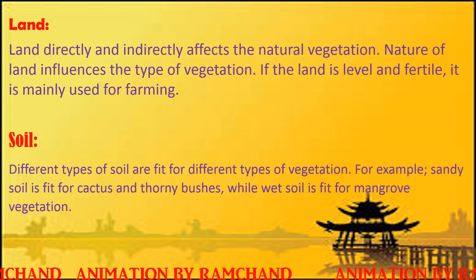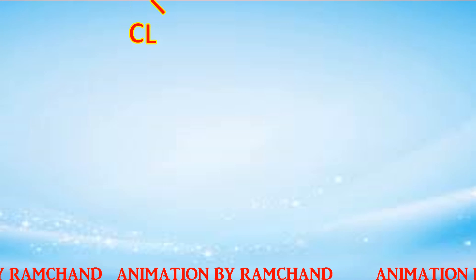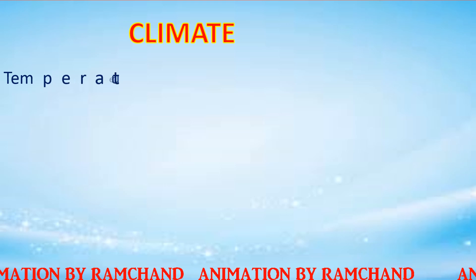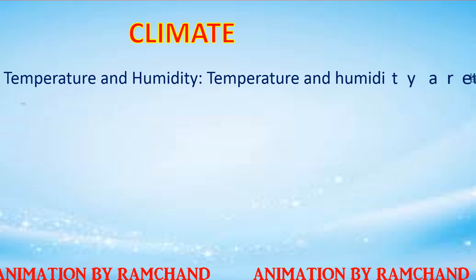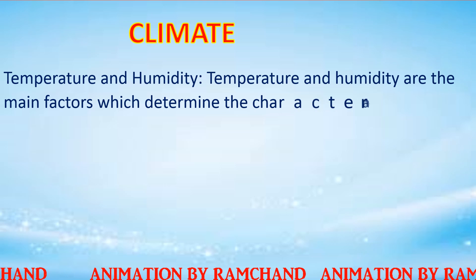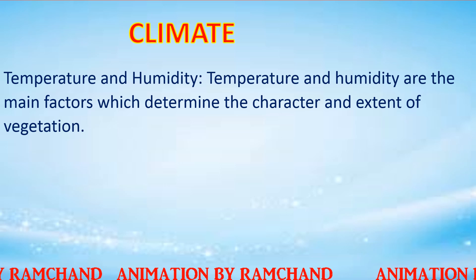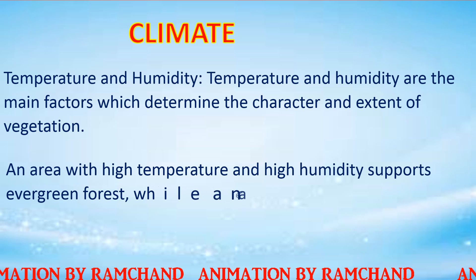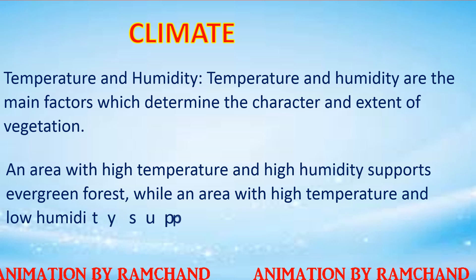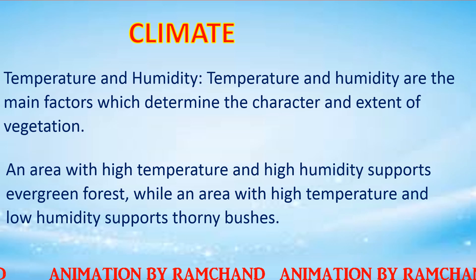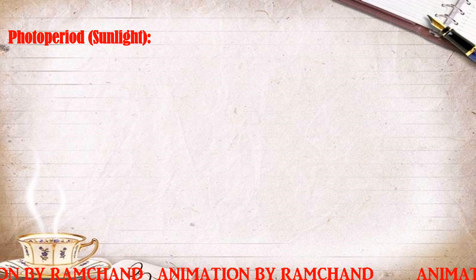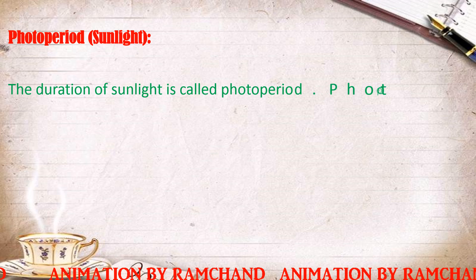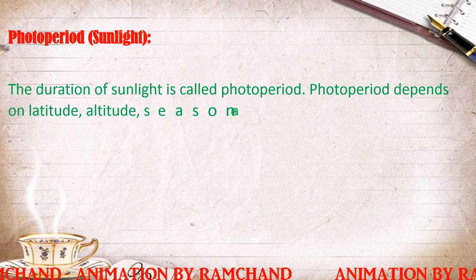For example, sandy soil is fit for cactus and thorny bushes, while wet soil is fit for mangrove vegetation. Temperature and humidity are the main climate factors which determine the character and extent of vegetation. An area with high temperature and high humidity supports evergreen forest, while an area with high temperature and low humidity supports thorny bushes.